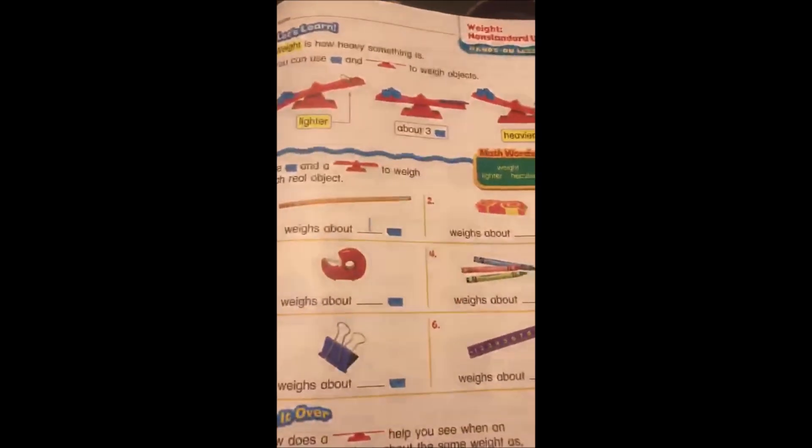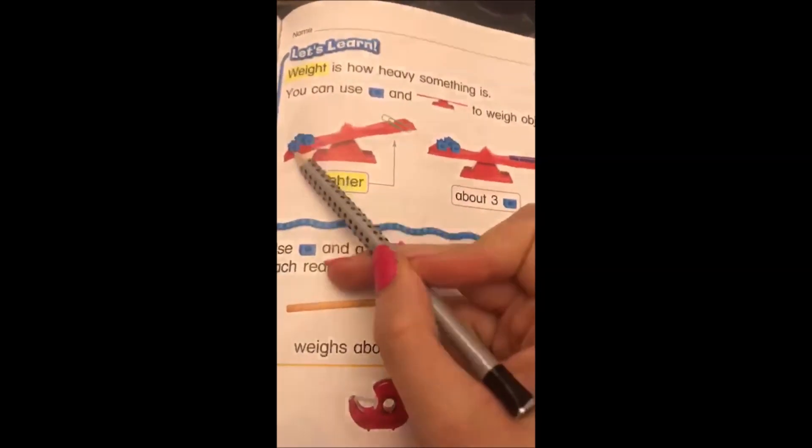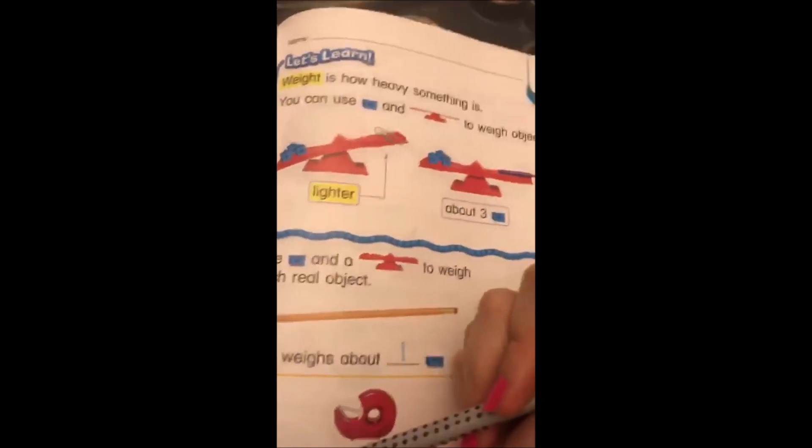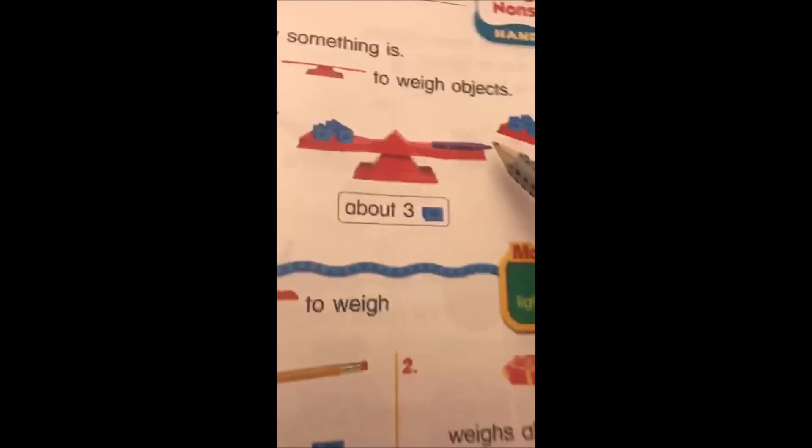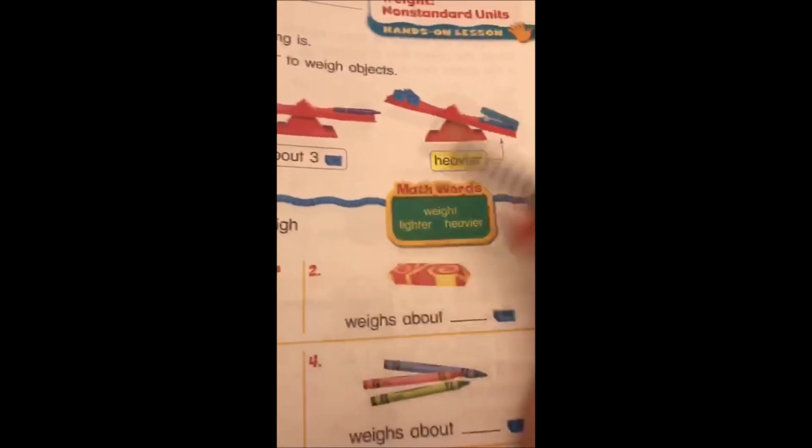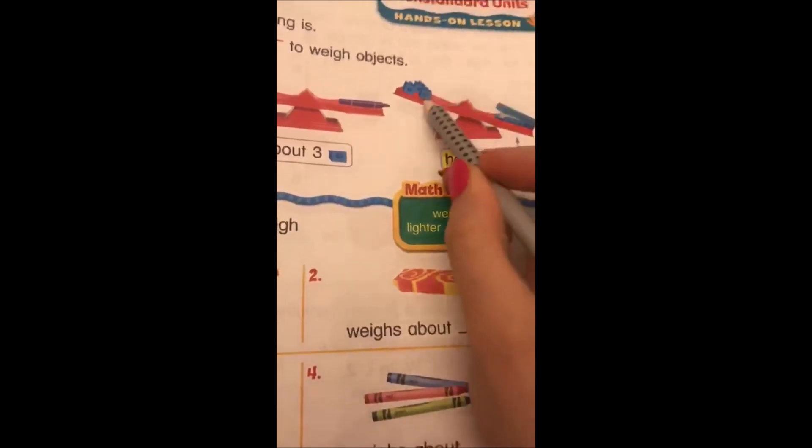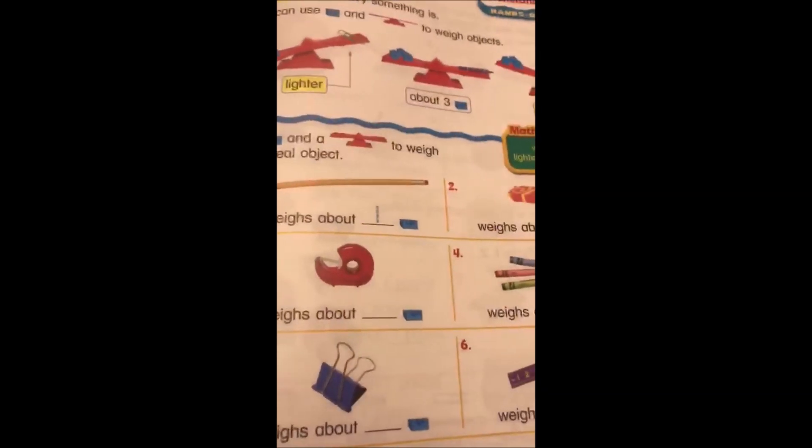Let's start. They said a paper clip is lighter than three cubes, and they said that a marker if you see it is about three cubes, and they said that a stapler over here is heavier than three cubes. So basically here we're going to just estimate.